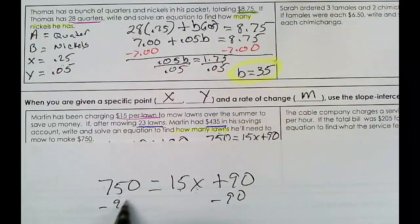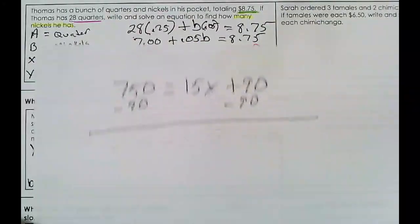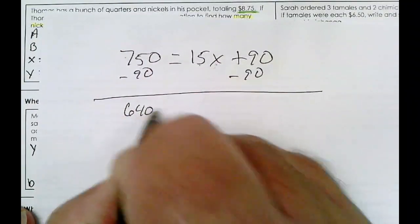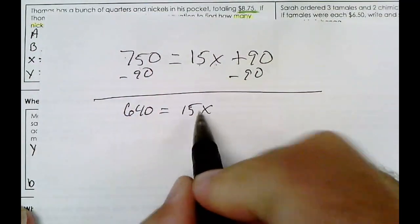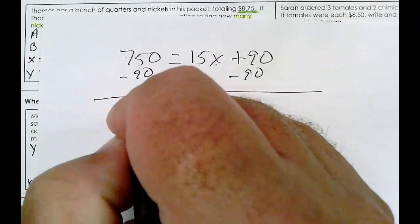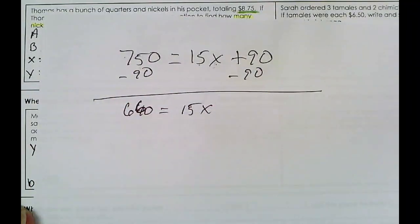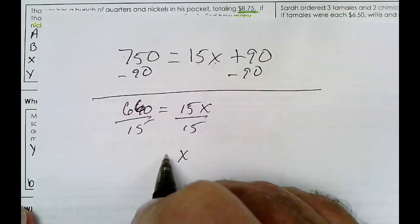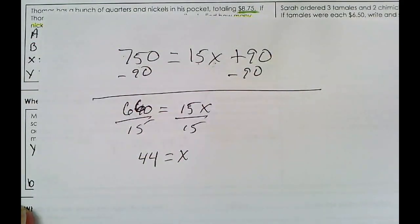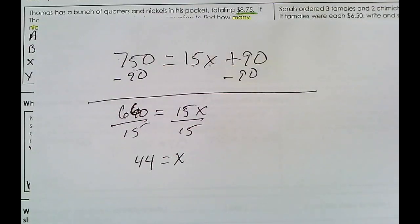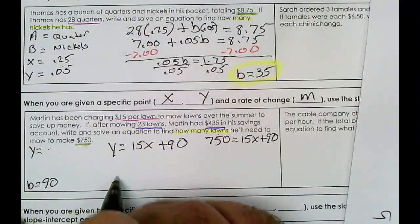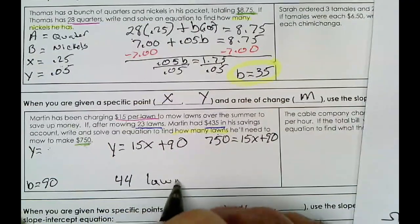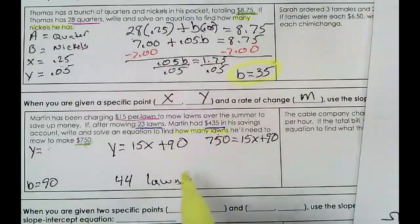Subtract 90, and you're left with 660. Divide by 15, and you get x is equal to 44. So we know that he will need to cut 44 lawns in order to save $750. That answers the question we were going for.